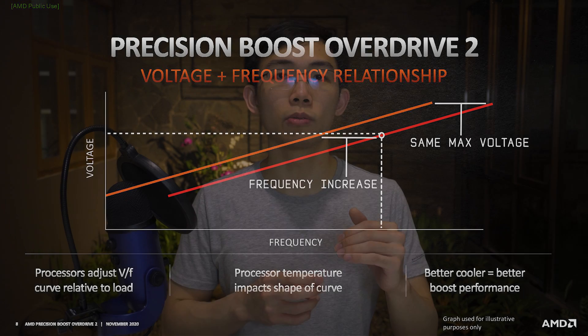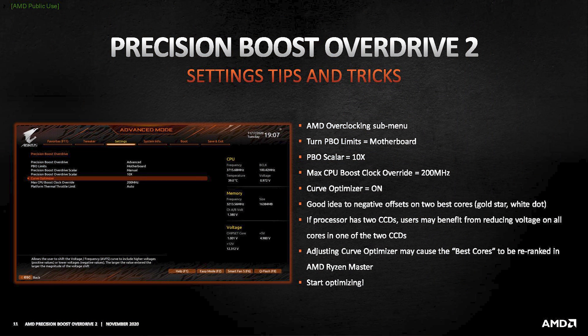With that in mind, the best way to tune Curve Optimizer really depends on whether you have a dual-CCD CPU or a single-CCD CPU. On a dual-CCD CPU, the first CCD is always the better CCD that will boost higher than the second CCD. The right way to tune Curve Optimizer differs depending on if you have a dual-CCD CPU like the Ryzen 9 5950X and 5900X, or a single-CCD CPU like the Ryzen 5 5600X and Ryzen 7 5800X.